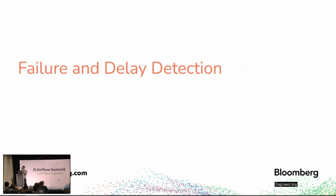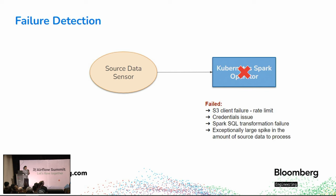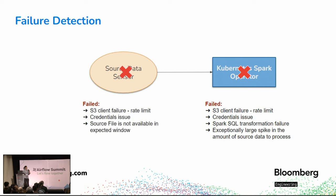Let's talk about failure and delay detection. Here is a simple diagram of our lakehouse ingestion workflow. A number of things could go wrong: the Kubernetes Spark job operator could fail for various reasons, the source data sensing task could also fail for various reasons.